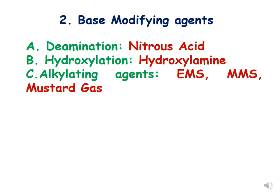The second category of chemical mutagens is base modifying agents. There are three kinds: first, deamination — the example is nitrous acid; second, hydroxylation — the example is hydroxylamine; third, alkylating agents — examples are EMS, MMS, and mustard gas.